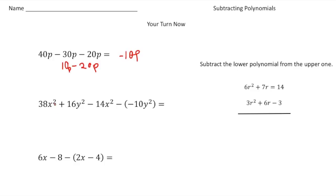Now down here, we have 38x². I'm going to subtract 14x² from 38x², which gives us 24x². Now we have 16y², and we're subtracting negative 10y², which is the same as adding 10y². So that's going to be plus 26y².